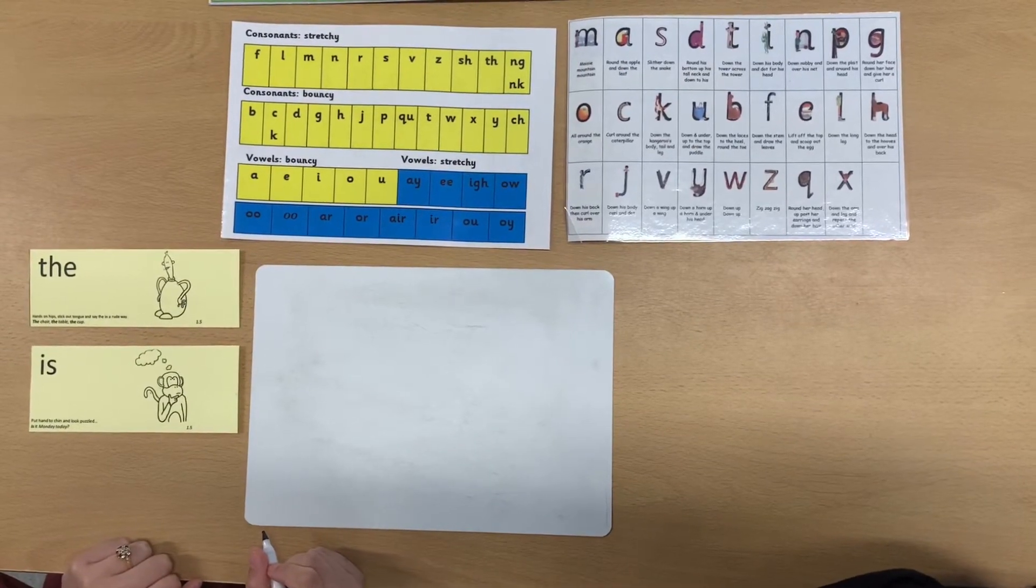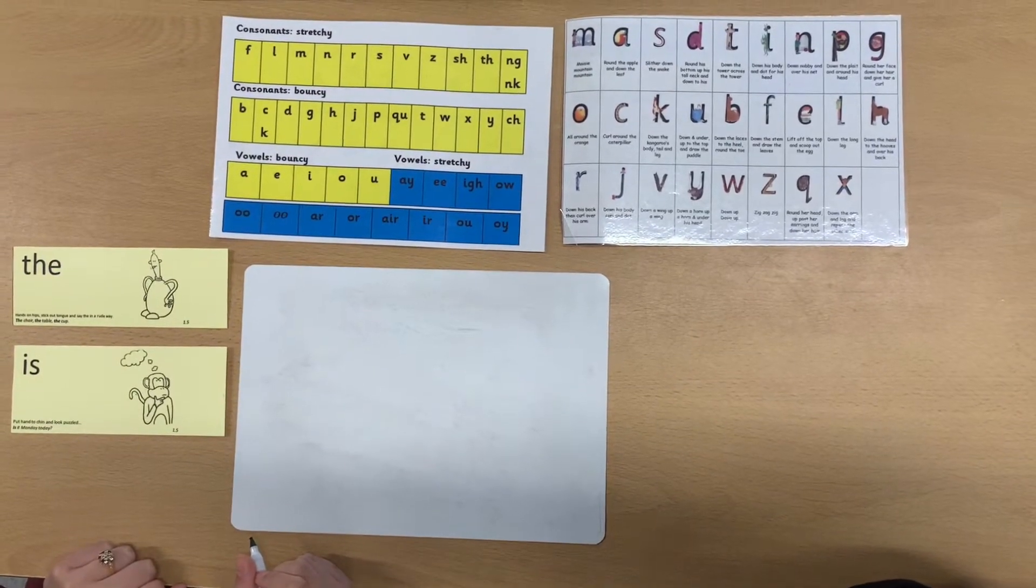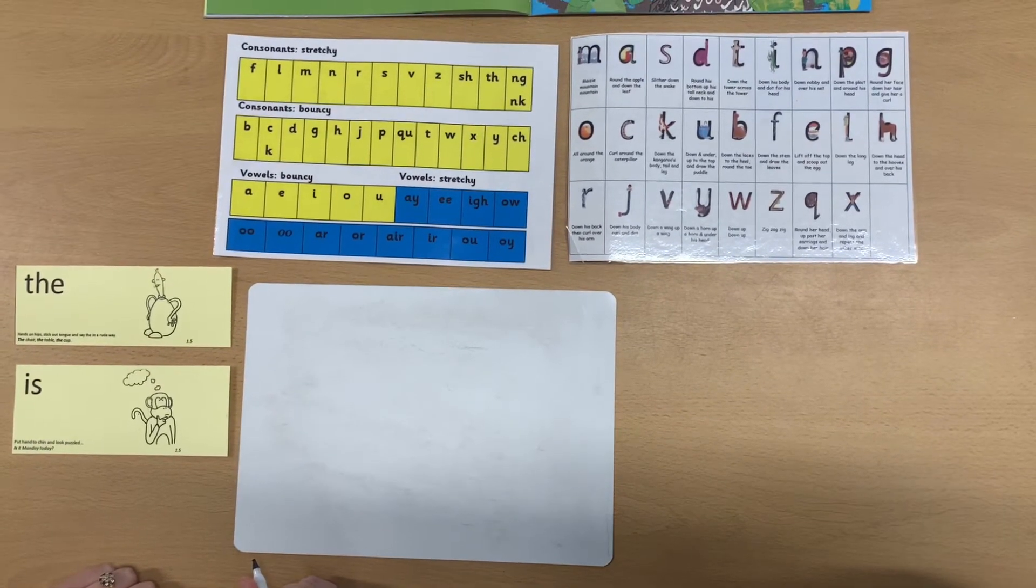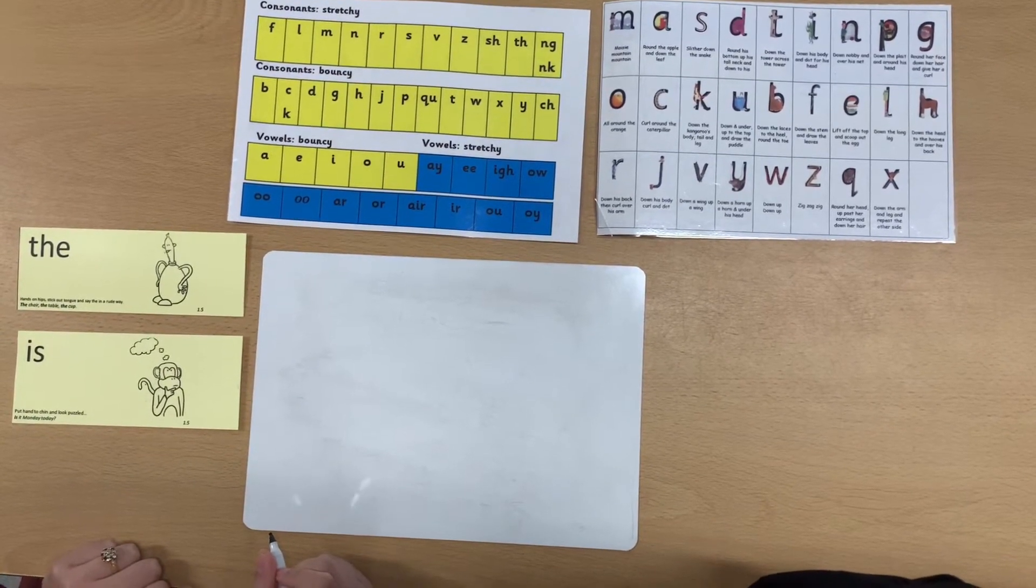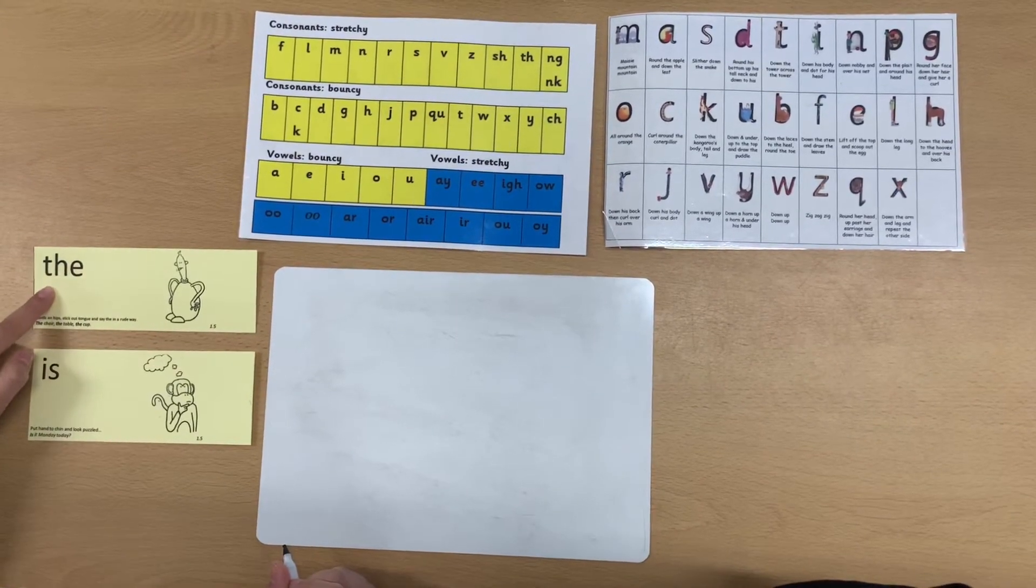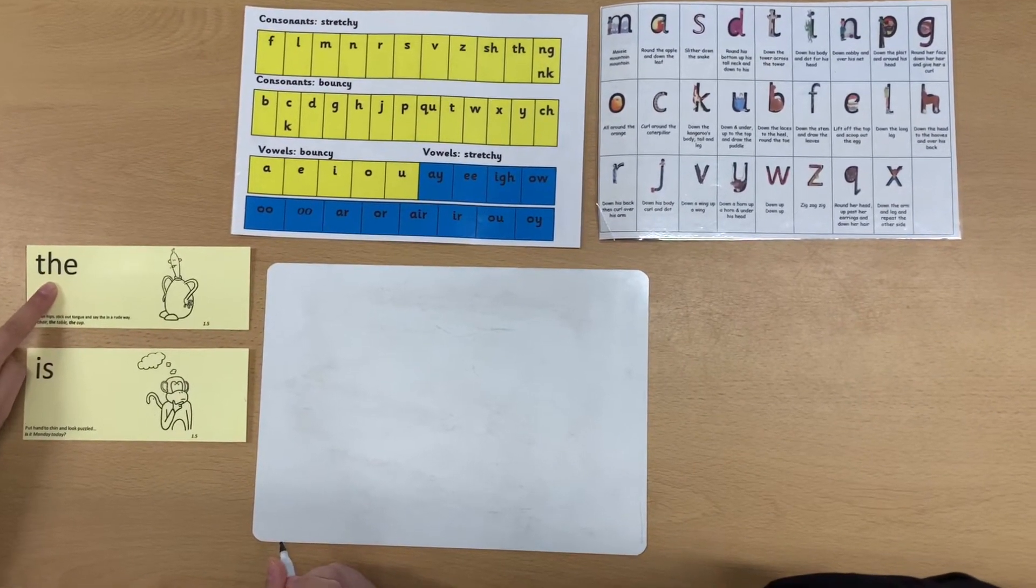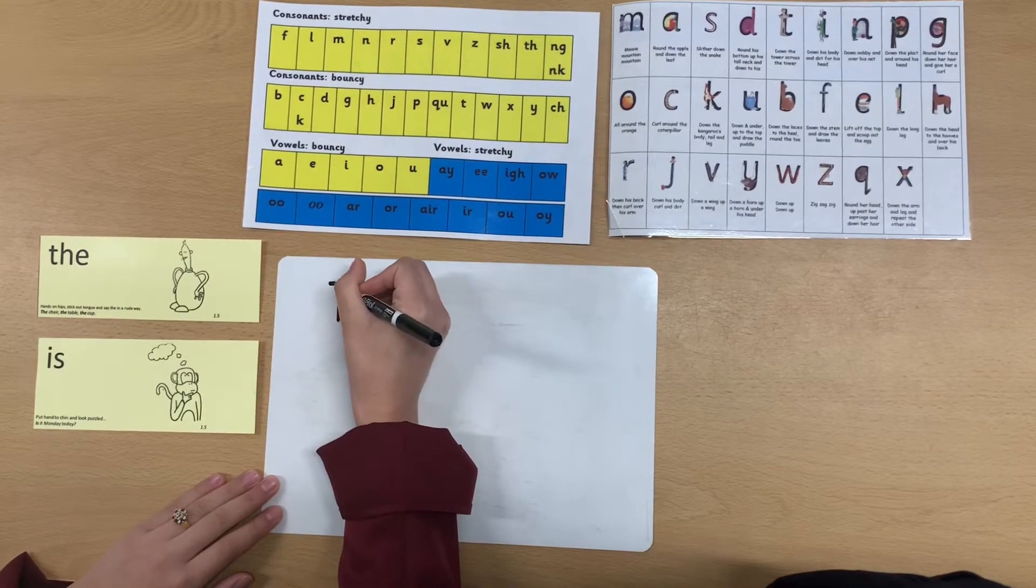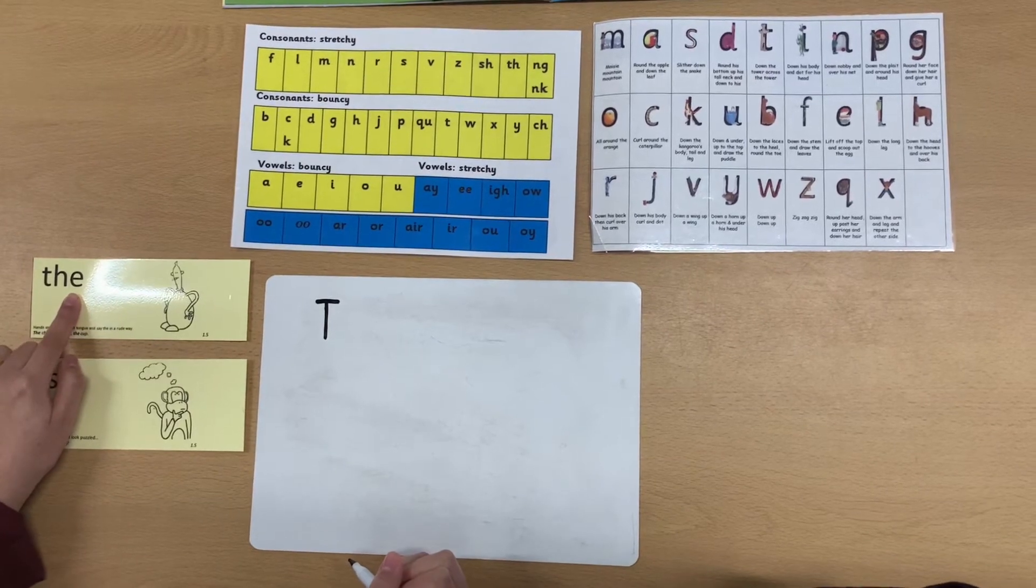We are now going to write the sentence together. To write the sentence, you can use the list of high-frequency words in your reading folder, children. So let's begin. To begin our sentence, we need to have a capital letter. So the high-frequency word we are going to use is the. You can find this in your reading folder. We need to make sure that the is a capital letter. I've written my capital T and now I'm going to copy the rest of the word.